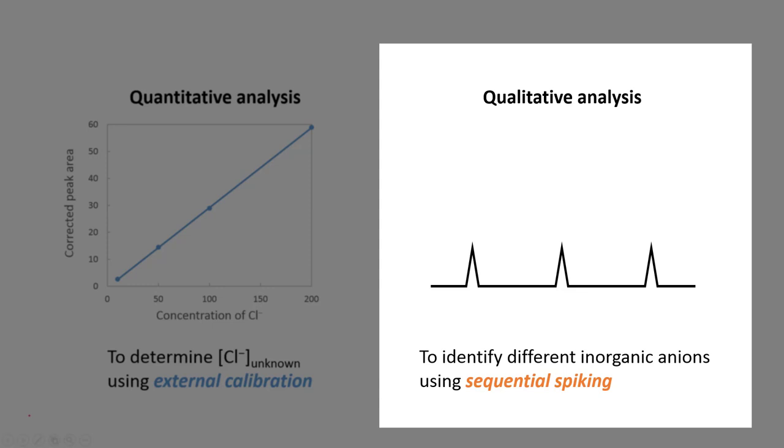For example, if we add a small amount of fluoride into the solution, the second CE run will give us a greater peak area for fluoride as compared to the previous CE measurement. Then we will know this peak is actually due to fluoride. And we can repeat this process with additional chloride and then bromide until all anions have been identified.